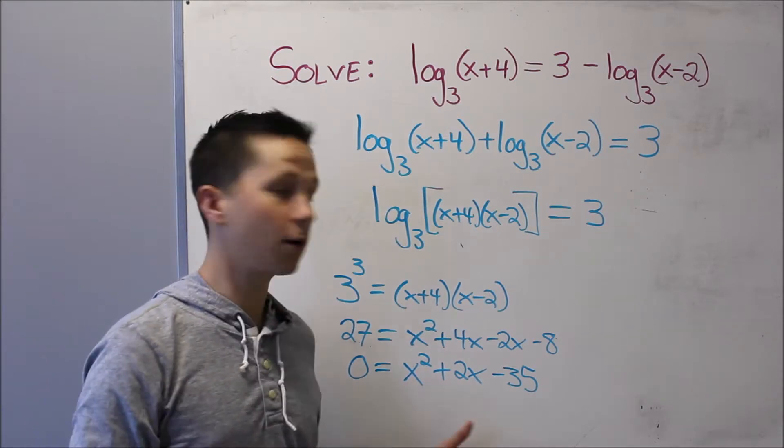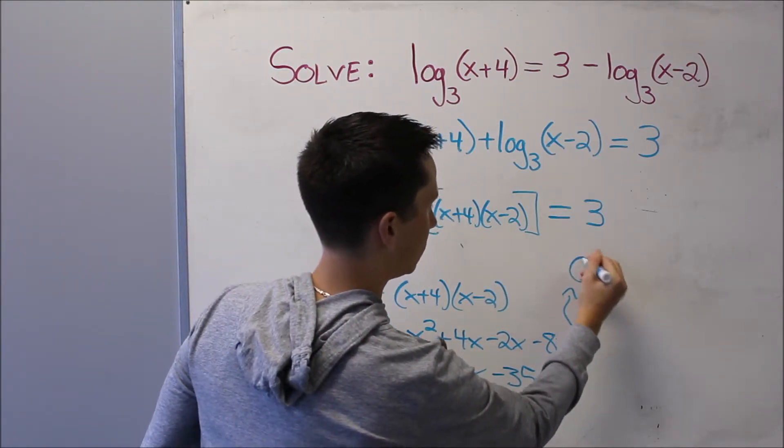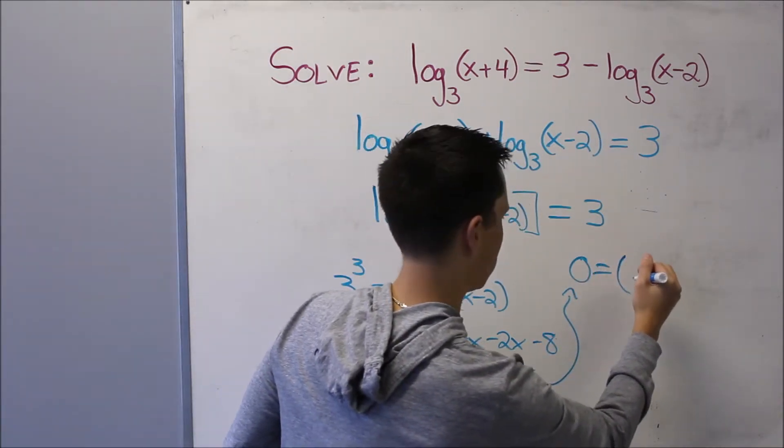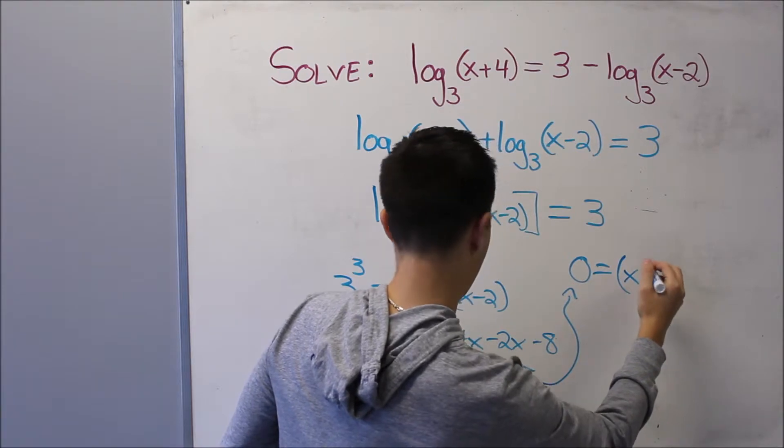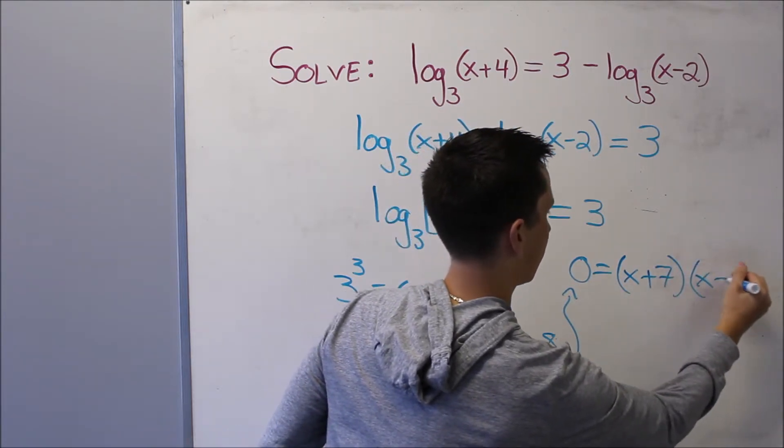And if I want to solve this, I can factor it. I'll bring it up here. 0 equals, this is going to factor into (x+7)(x-5).